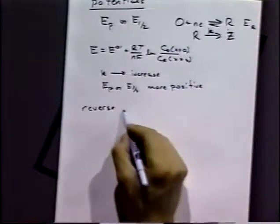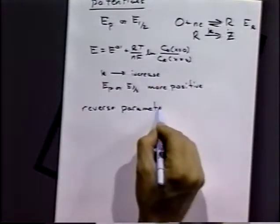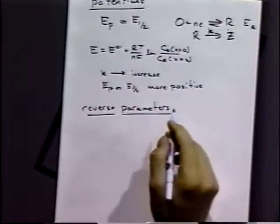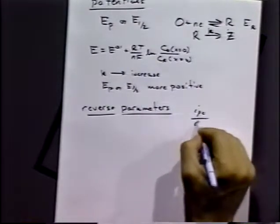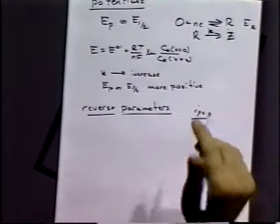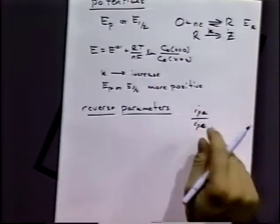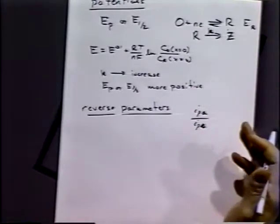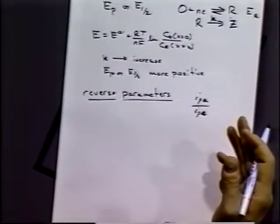What about reverse parameters? Well, IPA over IPC. IPA over IPC, normally remember that's one for a reversible case. With EC reactions, that ratio is going to change dramatically. As soon as we have an EC reaction, IPA essentially drops to nothing. And so that value goes to zero. So it goes from one to zero, and that would indicate to you that there is some sort of chemical reaction going on.